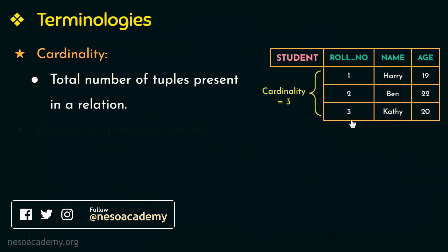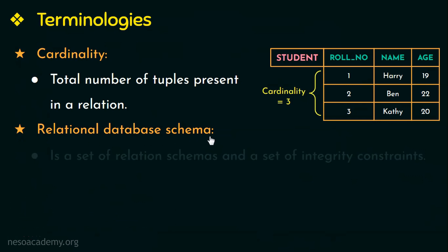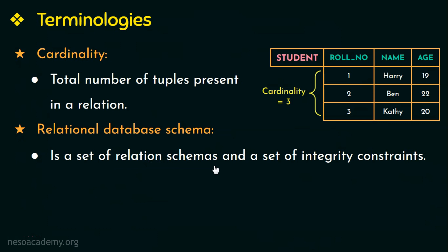The next terminology is relational database schema. A relational database schema is a set of relation schemas and a set of integrity constraints. That is, if I take a company database, the relational database schema of that company would have a collection of relation schemas like the employee relation schema with employee details, the department relation schema, the project relation schema, and so on. A collection of all these relation schemas along with the integrity constraints makes up the relational database schema for a company database.